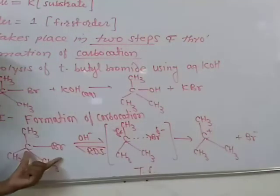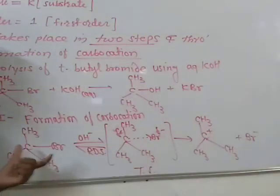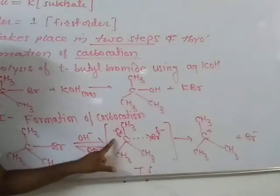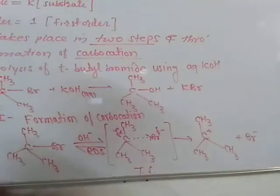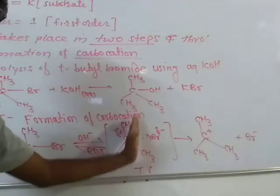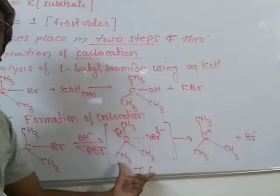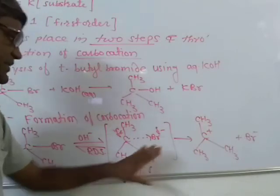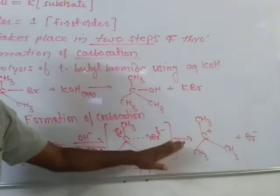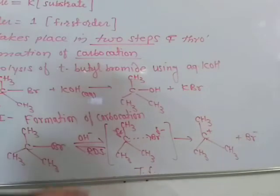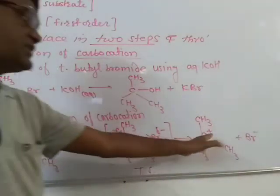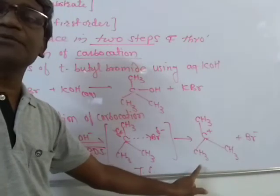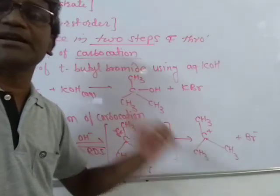The C-Br bond undergoes complete breaking. The transition state is partially bonded with carbon, and finally this bond will break completely. So this is a highly unstable state called the transition state. Finally, a carbocation will be formed, and this is the most stable carbocation — a tertiary carbocation is formed.